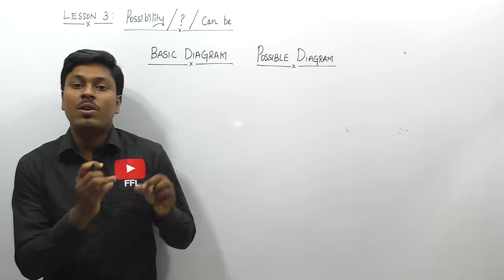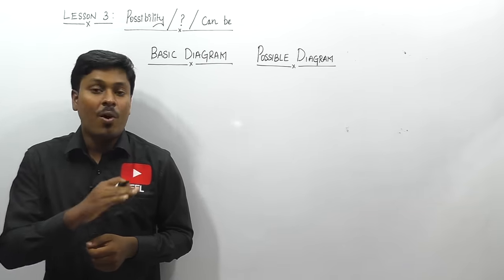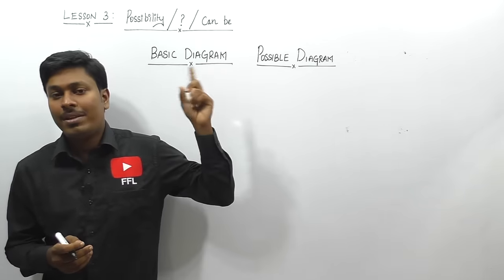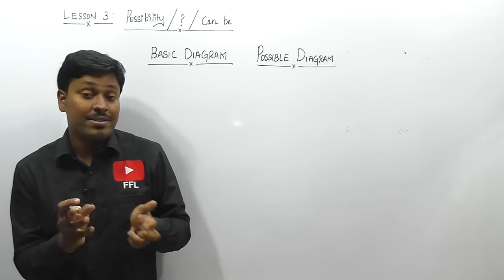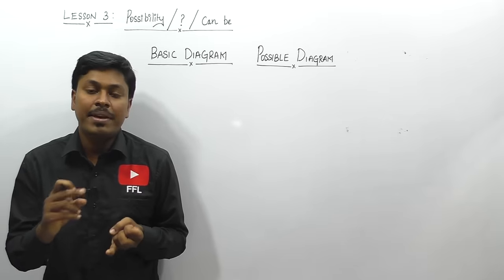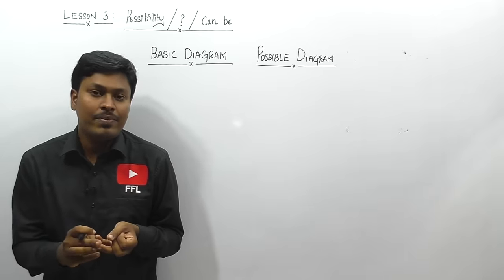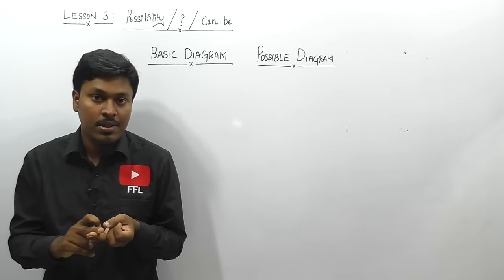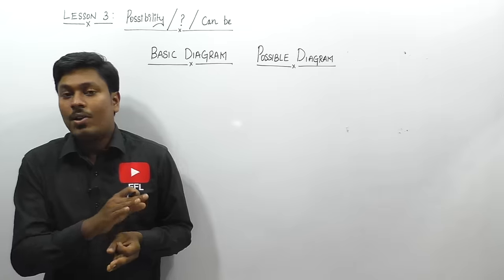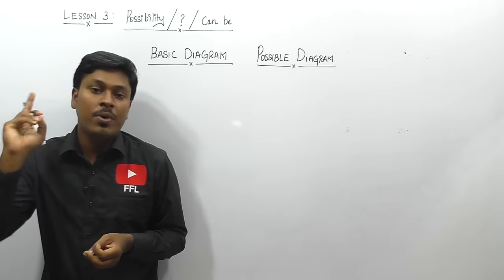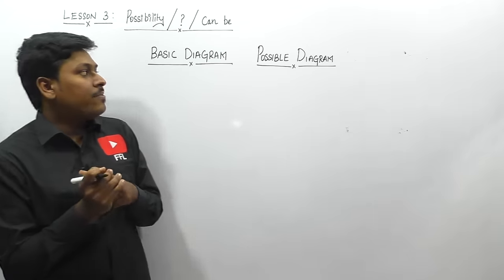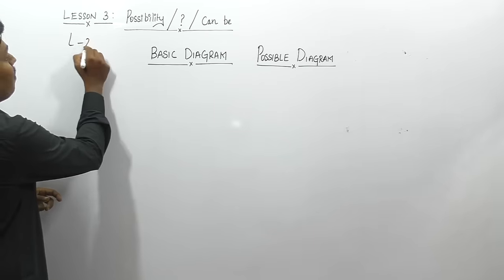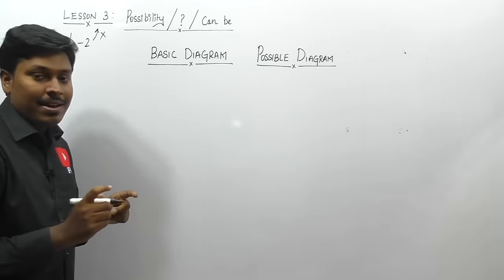In lesson number three, we are going to solve five different questions on the topic syllogism. All five questions have conclusions based on possibility — which can also be called 'can be' or 'question mark' conclusions. In lesson one we saw conclusions based on 'some' and 'all,' and in lesson two we solved five questions where conclusions were based on 'no.' In lesson three, always compare it with lesson two, because they are opposites.